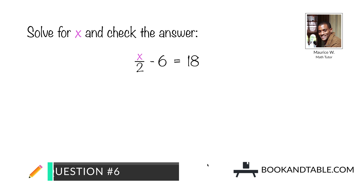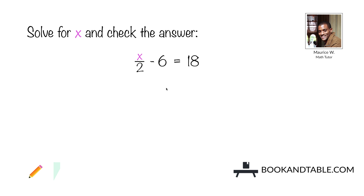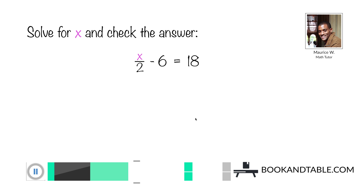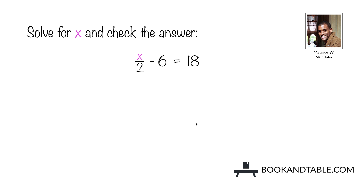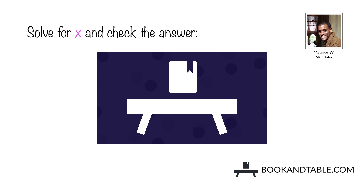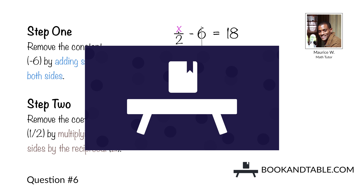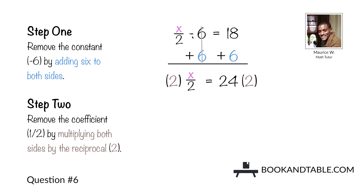Question number six: solve for x and check the answer. x divided by 2 minus 6 is equal to 18. Step one: remove the constant negative 6 by adding 6 to both sides. This leaves you with x divided by 2 on the left side, and 18 plus 6, which is 24, on the right side. Now we want to eliminate the coefficient 1/2.